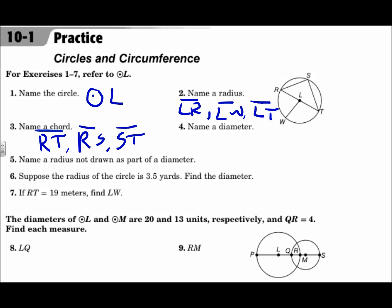For number four, the diameter is a chord that goes through the center. This figure has only one: segment RT. Notice that segment RT contains two radii — radii being the plural of radius. Radius LR and LT make up diameter RT. A radius is half as long as a diameter.